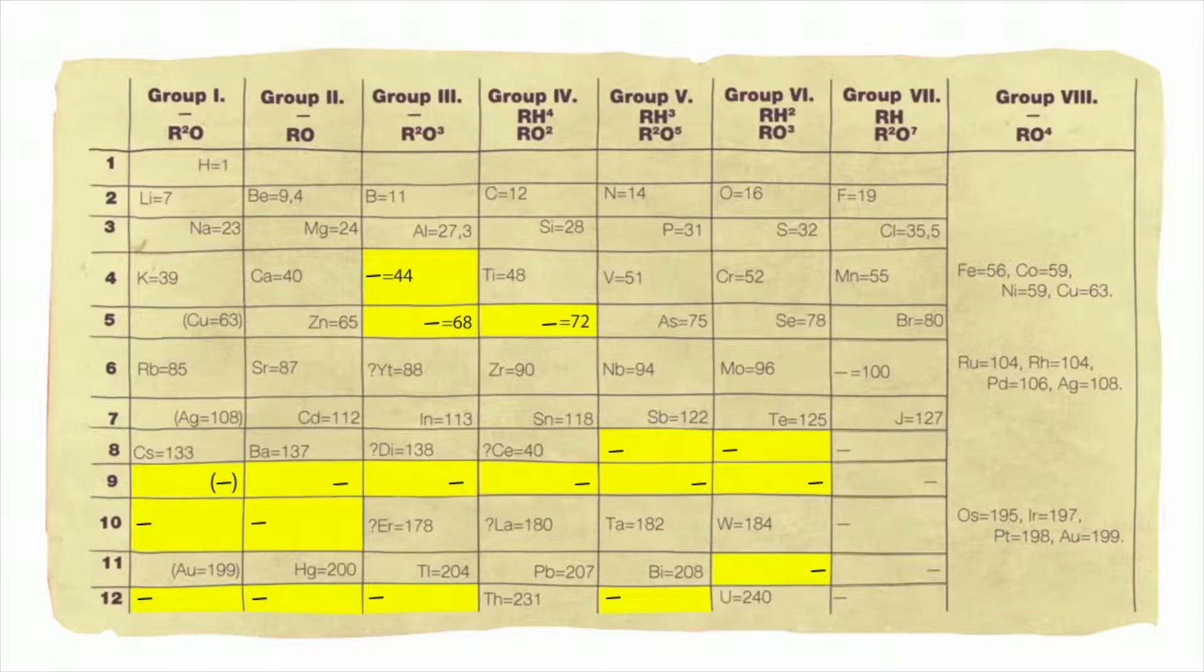The arrangement of elements in the table by increasing atomic weight shows a pattern in which properties of the elements are repeated.